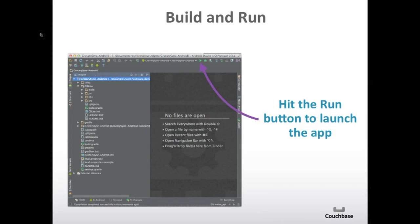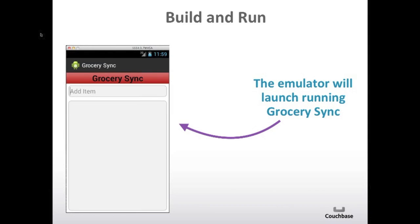To run it, you can hit the Run button on the top, and that should launch the emulator. If you've never used Android Studio and you haven't defined an emulator — or what they call an Android Virtual Device — you'll need to do that too. I'm not going to go through that, but it's very straightforward. Once you run it, you will be presented with an emulator screen like this. This is the empty Grocery Sync app with no data.